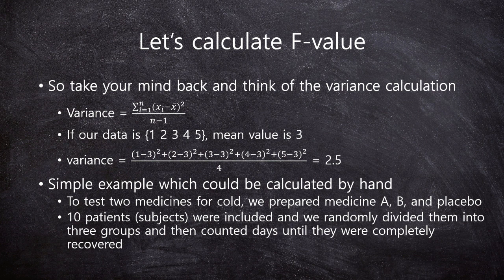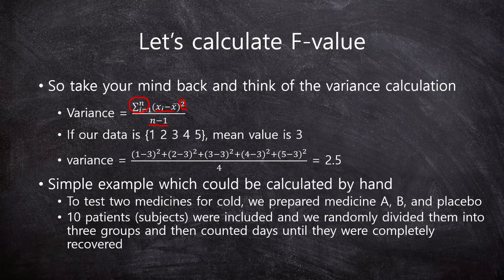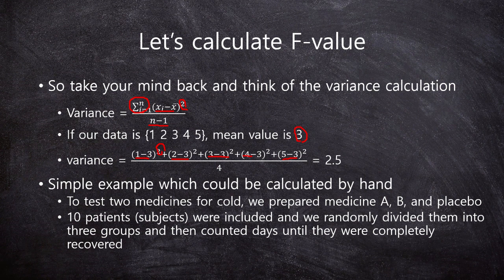Let's calculate the F value. First, recall the variance calculation. Variance is the sum of (x_i minus x-bar) squared, divided by n minus 1. For example, if our data is 1, 2, 3, 4, 5, the mean value is 3. Then the variance is calculated as (1−3)² + (2−3)² + (3−3)² + (4−3)² + (5−3)², all summed and divided by n−1 = 4, which equals 2.5. This simple example, which can be calculated by hand, is used in this video.